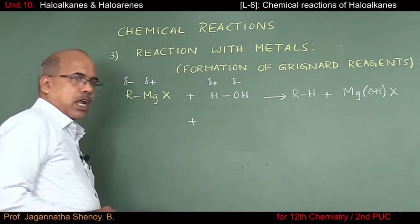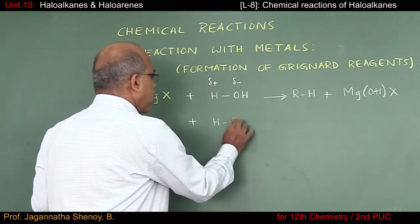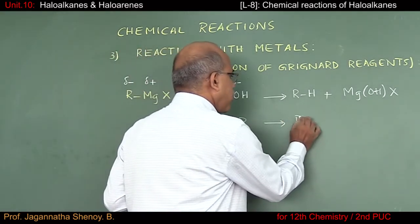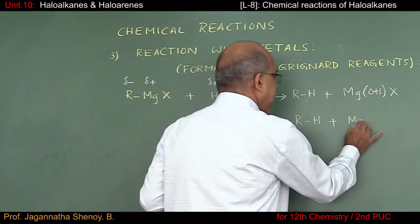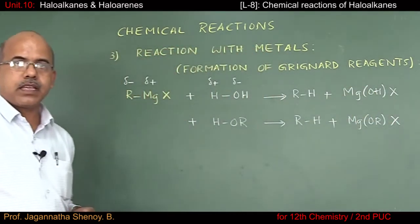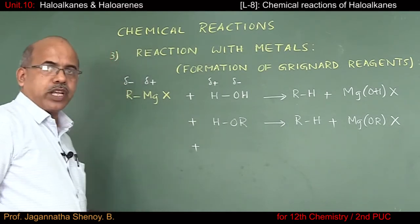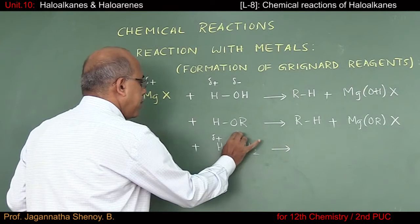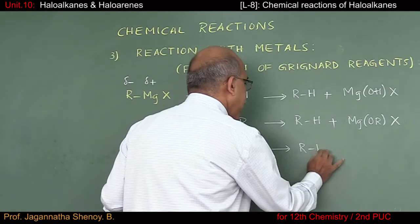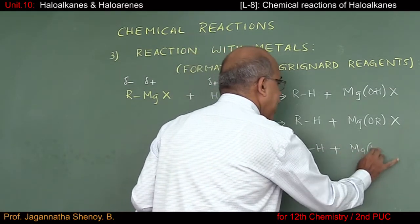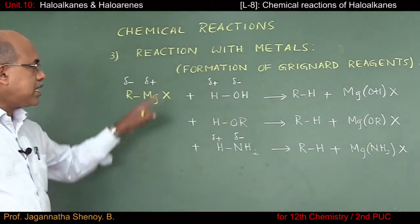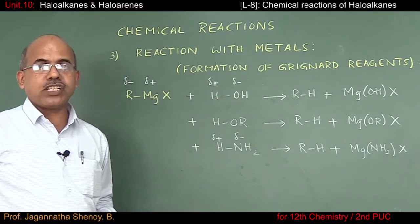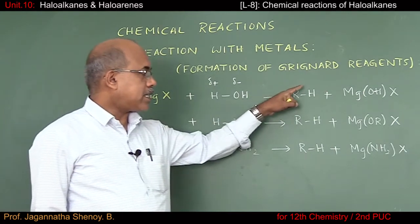Similarly, with alcohol (HOR), the products are RH and MgORX. With ammonia and ammonia derivatives — also compounds containing active hydrogen — the product is RH plus Mg(NH2)X. From these reactions it is very clear that when you use or form a Grignard reagent, compounds containing active hydrogen must not be present; if they are present, we get the respective hydrocarbons.